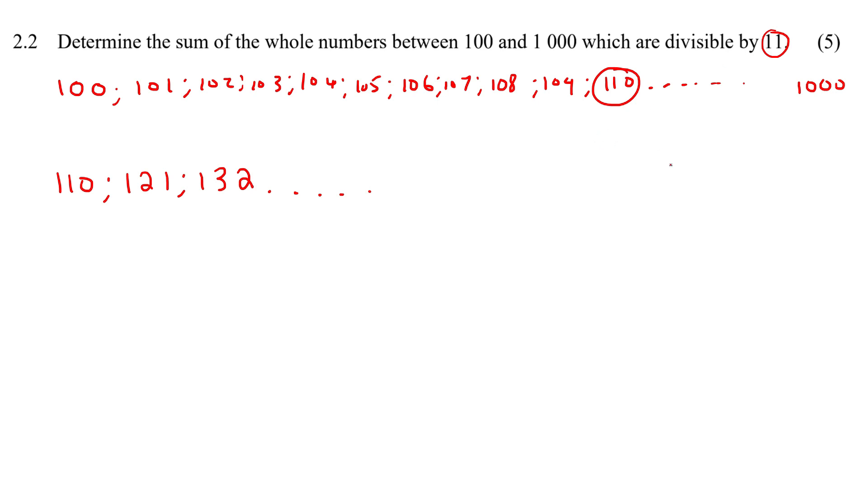Now we've got to figure out where the last term would be. So is the number 1000 divisible by 11? Well, no, you can try it on your calculator, it won't work. So then what is the number that comes before 1000? 999. Now that is not divisible by 11 either, and that number is also not divisible by 11. Then you can try 998.